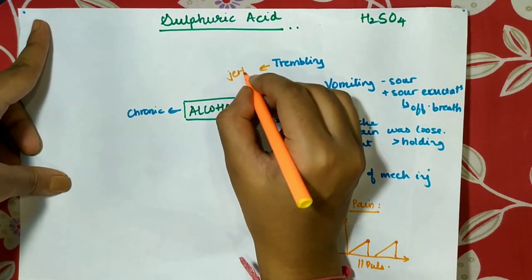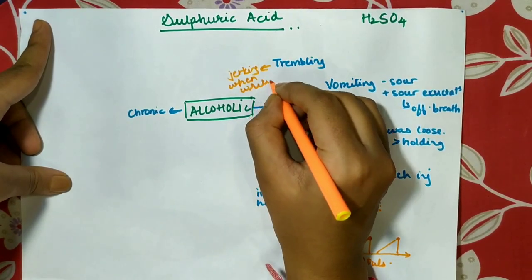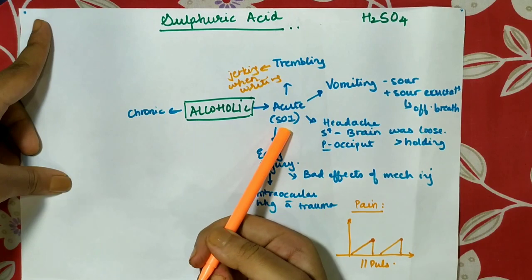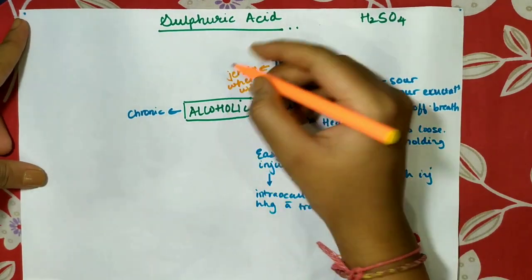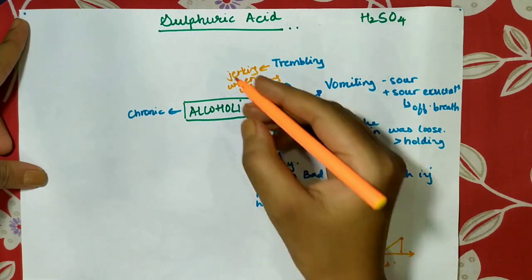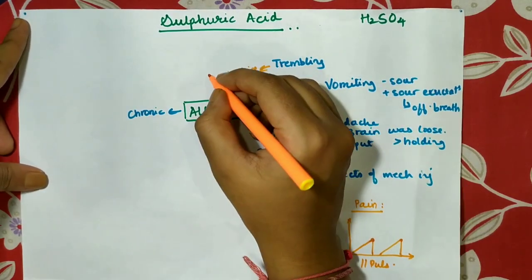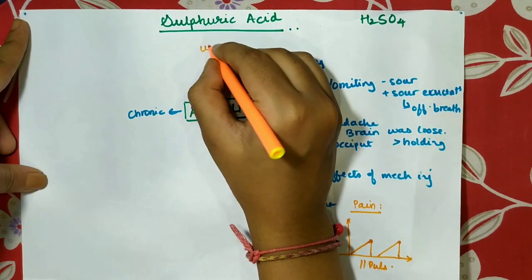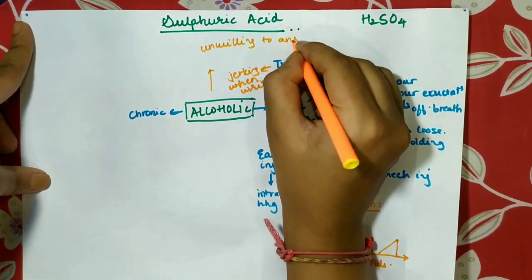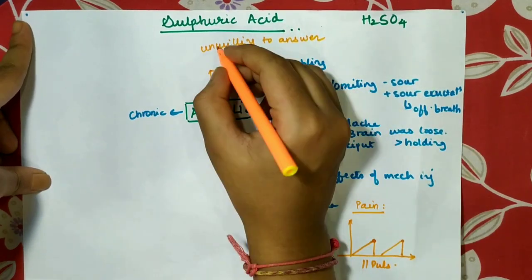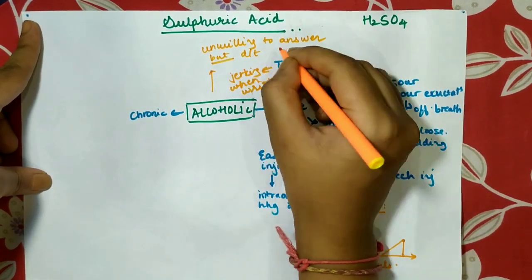We can also associate trembling with jerking when writing. Moving to the third stage — narcosis — there is one mental symptom suggestive of this stage: unwilling to answer, not due to obstinacy but due to inaptness.